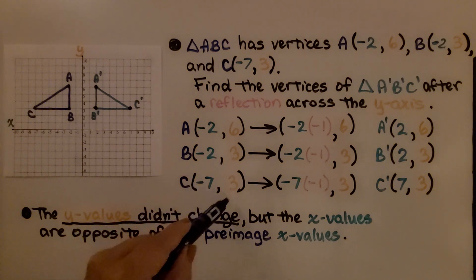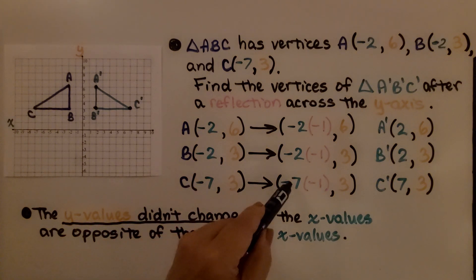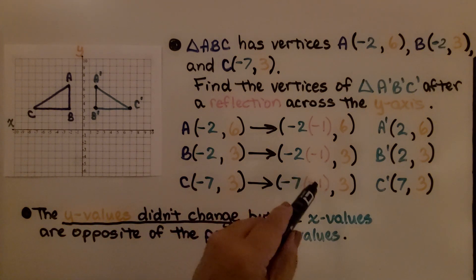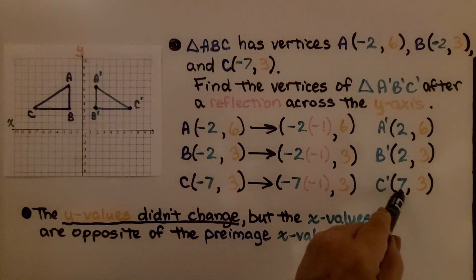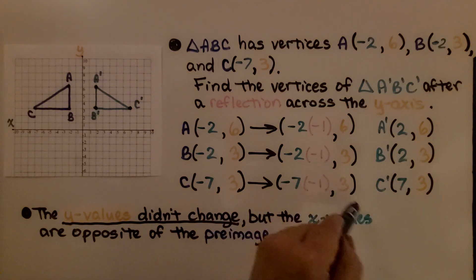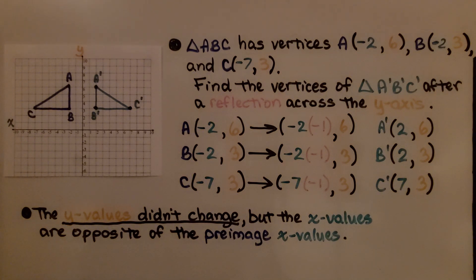C is at negative 7, 3. It's going to map to negative 7 times negative 1 for the x-value, which gives us positive 7, and y stays 3. The y-values didn't change, but the x-values are opposite of the pre-image x-values.